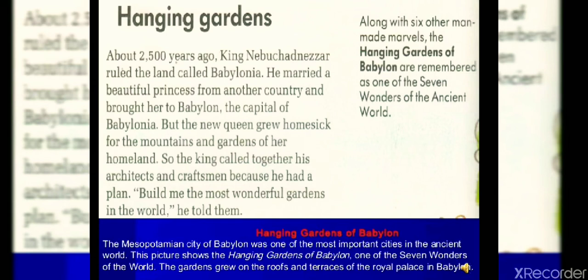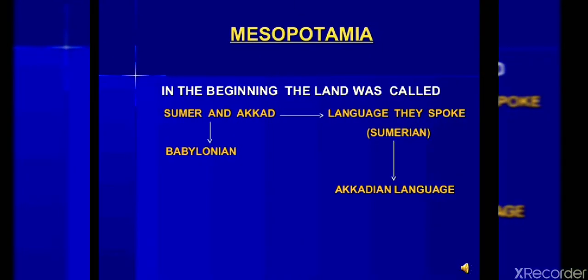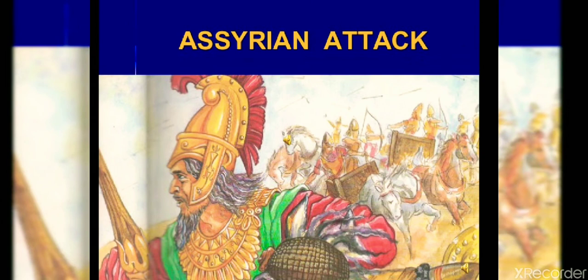We have already discussed that the land was called Sumer and Akkad — that is what Mesopotamia was called in the beginning. Later, Babylon was added. The Sumerian and Akkadian languages, from these combined, gave rise to Aramaic, which is still in use today. Then Assyria attacked Sumer and established Assyrian dominance, promoting the Assyrian language.